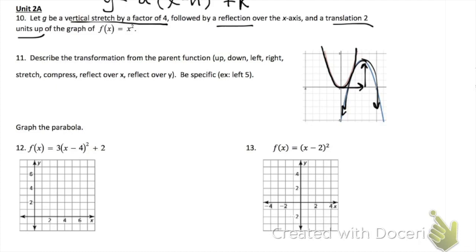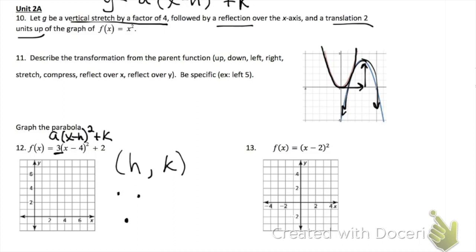Problem 12 is for graphing. Our vertex is the point H, K. Remember, this is your H and your K at the end. That 3 would be a stretch — so once you put a point for your vertex, on both sides go over 1, up 3. Over 1, up 3 to get that stretch of 3 in there.